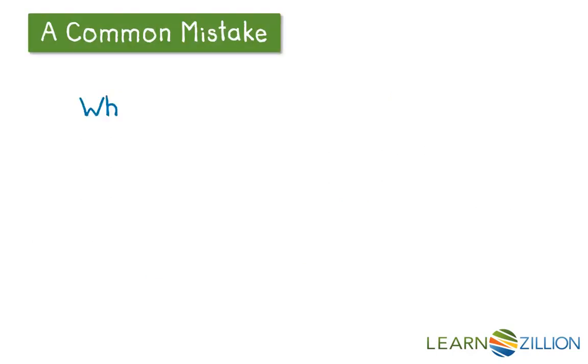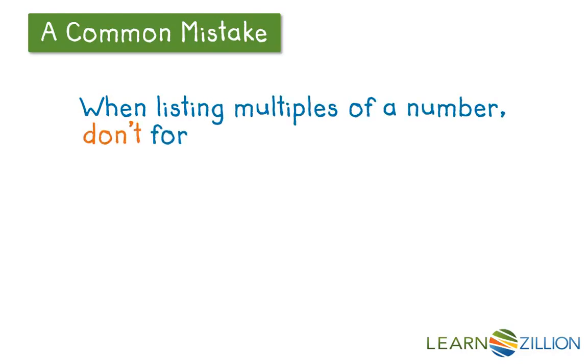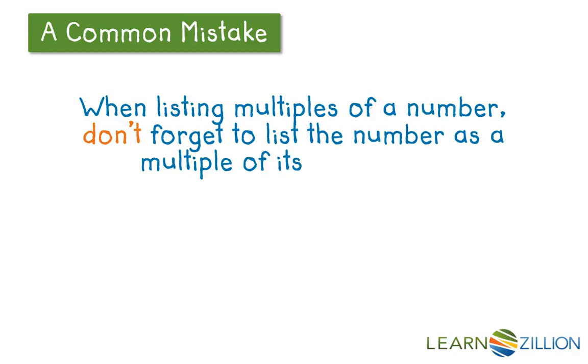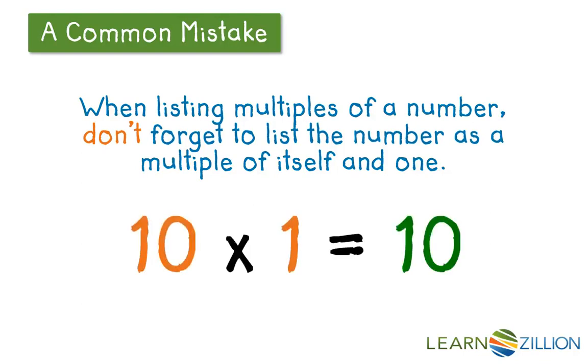A common mistake that people sometimes make is forgetting to name the number as a multiple of itself. For example, 10 is a multiple of 10 because 10 times 1 is 10. When finding the multiples of a number don't forget to start with the number itself.